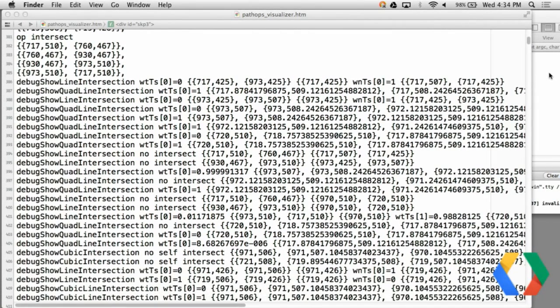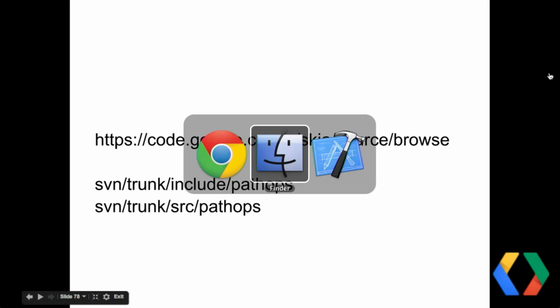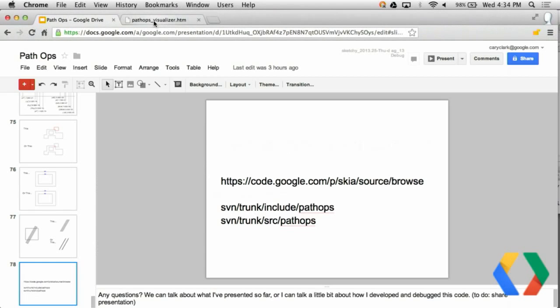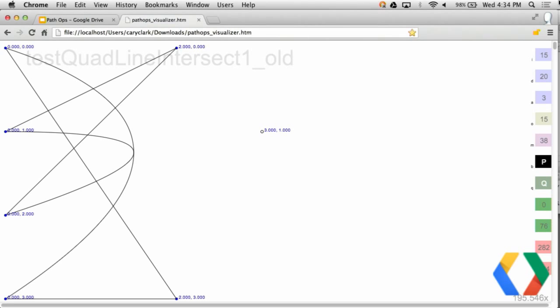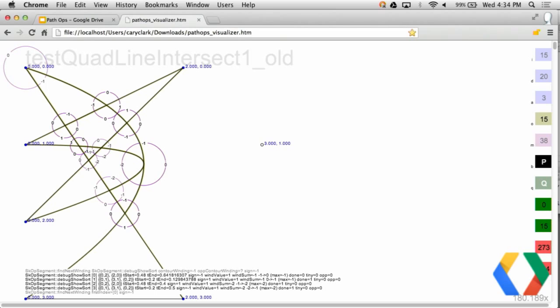When I generate PathOps, I do a lot of printfs, and the printfs look a lot like this. And while these numbers are helpful, sometimes they're very hard to visualize. So I wrote a way to visualize them. This is a web page that contains a canvas. And the canvas contains the printf output that I showed earlier, which is at the bottom of the screen. The top part of the screen shows visualizing that output and visualizing pieces of that output.